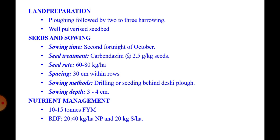Land preparation: plowing followed by 2 to 3 harrowings are sufficient. This crop generally prefers a well-pulverized seedbed. Seed and sowing: sowing time is the second fortnight of October. For seed treatment, seeds should be treated with Carbendazim at the rate of 2.5 gram per kg seeds, then inoculate these seeds with Rhizobium which facilitates nitrogen fixing. Seed rate is 60 to 80 kg per hectare; spacing 30 cm within row. Sowing method is drilling or seedling behind the desi plough; sowing depth is 3 to 4 cm.